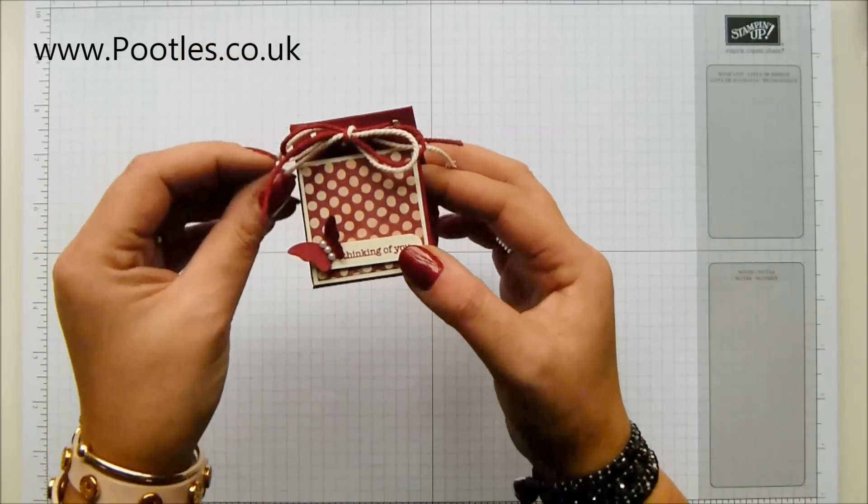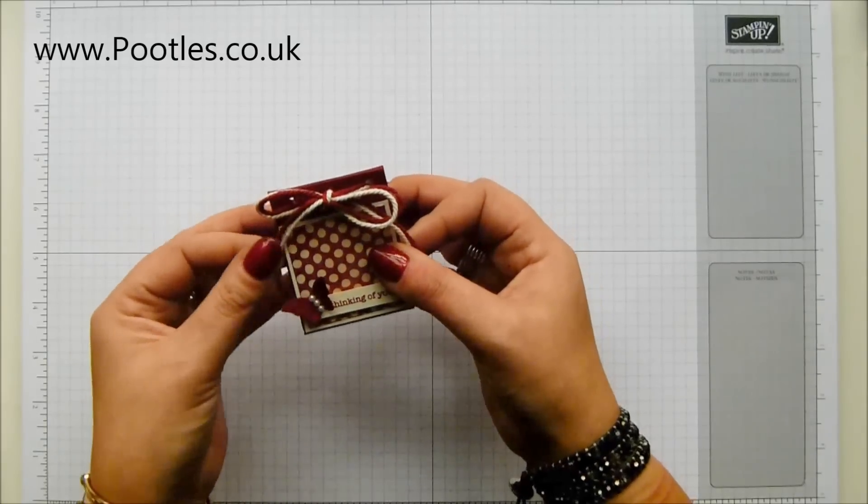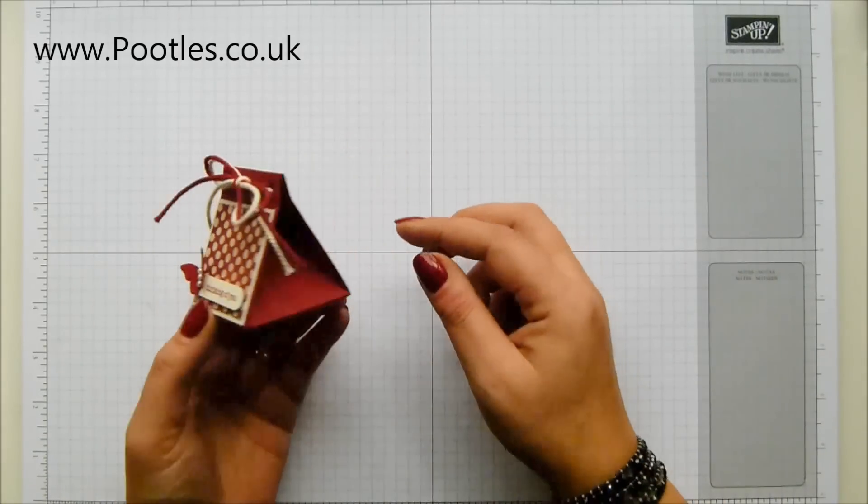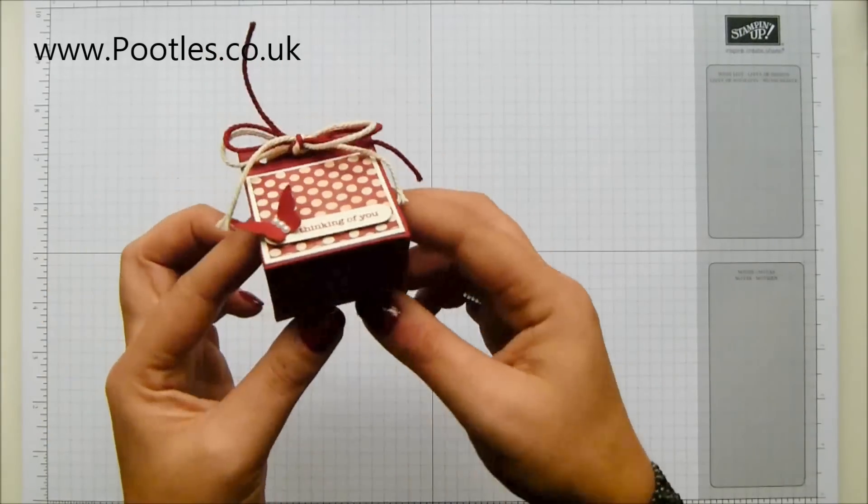I was making this a couple of weeks ago, and my eldest son, my 12-year-old son, came into the office, and I said, I don't know which color twine to put in it. Shall I put the very vanilla or the red? And he said both. So I did, and I'm going to show you how to make it.